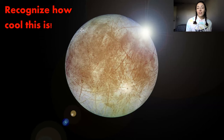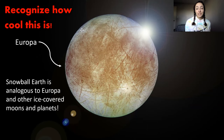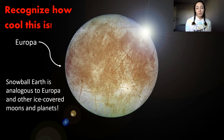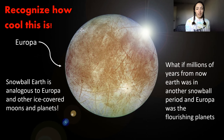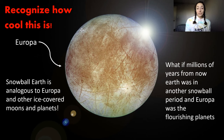I want to make sure that y'all understand how cool this is, because these periods in Earth's history where Earth was like a snowball are kind of analogous to other ice-covered planets and moons, such as Europa, which is an ice-covered moon that people are curious whether there's life under that ice. And so if Earth had it, why couldn't Europa or other ice-covered moons?